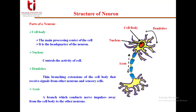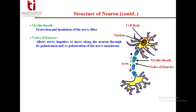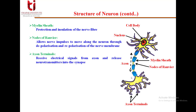Then we have the axon, which is a branch that conducts nerve impulses away from the cell body to other neurons. Next we have the myelin sheath, which protects and insulates the nerve fiber. Then we have the nodes of Ranvier, which allow nerve impulses to move along the neuron through depolarization and repolarization of the nerve membrane. We also have the axon terminal, which receives electrical signals from the axon and releases neurotransmitters into the synapse.